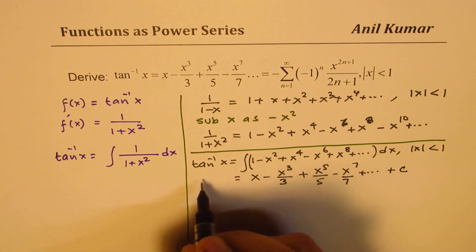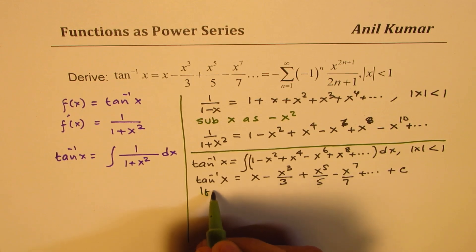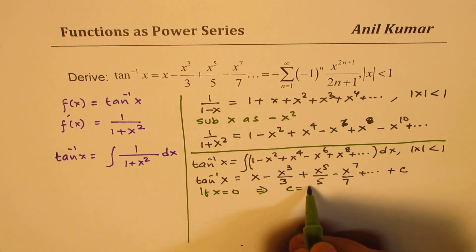So that is what we get for tan inverse x. Now to find the value of c, we can substitute x equals to zero. If x equals to zero, all these terms will be zero, so what we get here is c equals to zero.